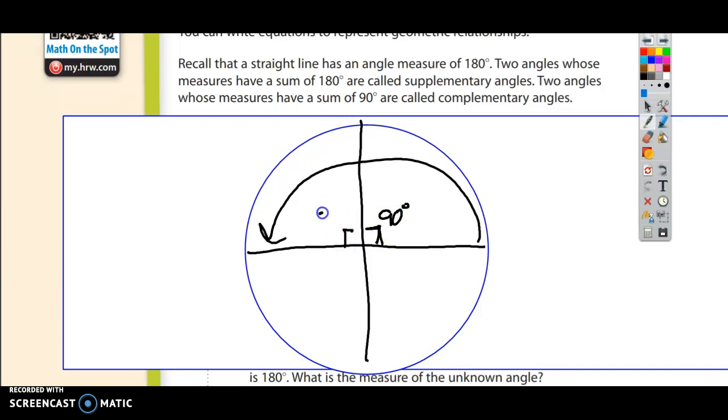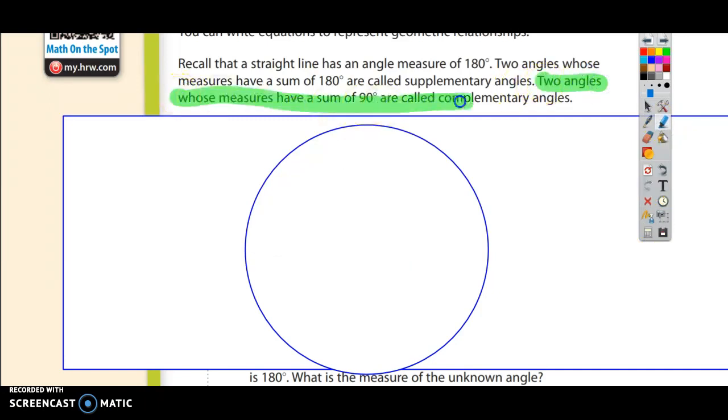90 and 90 would be 180, and another 90 and another 90 would be another 180. That adds up to a total of 360. This definition of complementary right here is when two angles whose measures have a sum of 90. So what that would look like would be from here to here is 90.